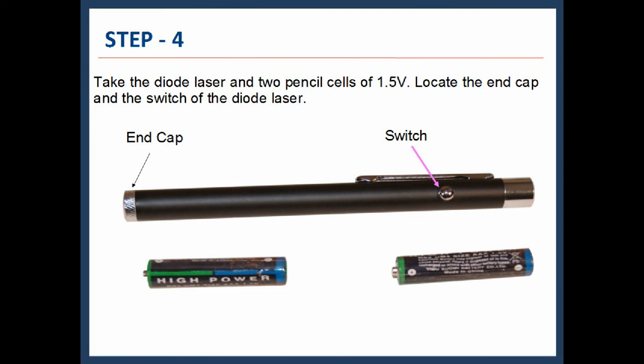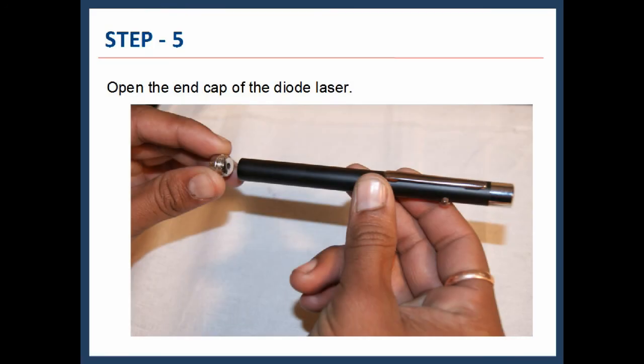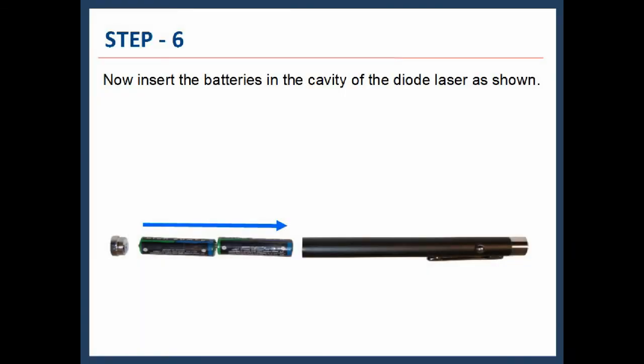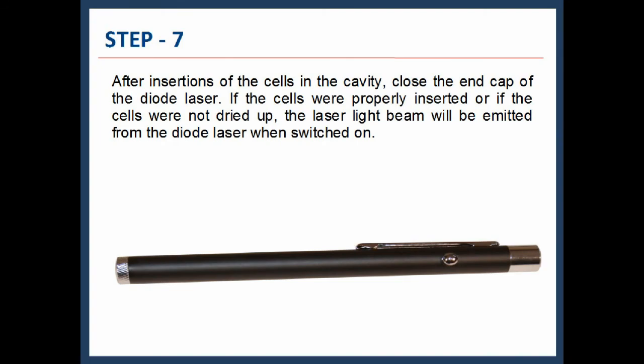Take the diode laser and two pencil cells of 1.5V. Locate the end cap and the switch of the diode laser. Open the end cap of the diode laser. Now insert the batteries in the cavity of the diode laser as shown. After insertion of the cells in the cavity, close the end cap of the diode laser.